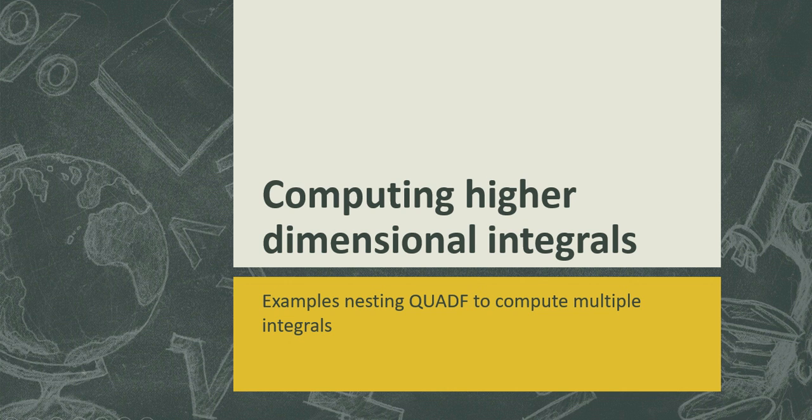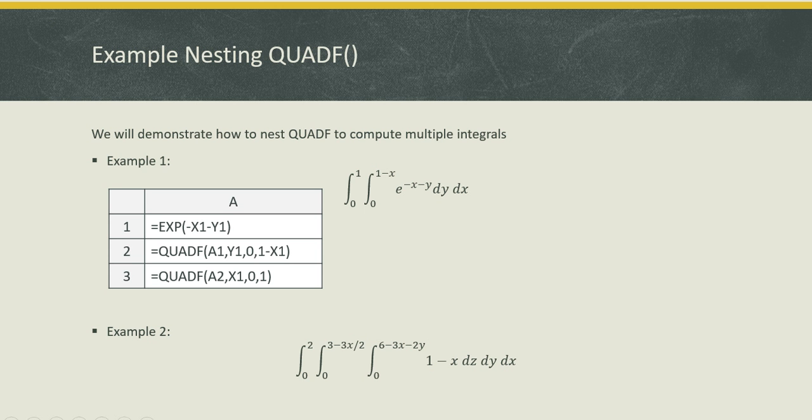Next, we are going to look at an example on how to compute higher dimensional integrals by nesting QuadF. In the first example, we will look at a double integral. As you see in the table, I define the integrand in a formula A1, and then I define the innermost integral using the first variable of integration y1, and I define my limits from zero to one minus x1. Then I define the outer integral in A3. Now my integrand for the outer integral is the inner integral in A2, and now the variable of integration is x1, and my limits go from zero to one. Evaluating A3 will compute the value of the double integral. That can be systematically extended to calculate integrals of any order.